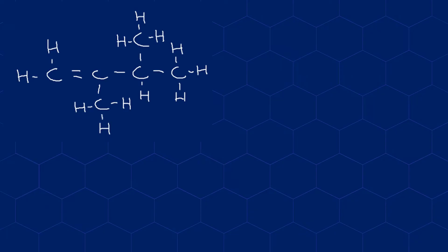The next example is a little different because it has a double bond. I'll follow the same pattern and number the carbons: one, two, three, four, five, and six. I'll start drawing from carbon one, moving along to two, then three, then four at the end of the main chain. Carbon five branches down from the third carbon, and carbon six branches up from there. There is a double bond between carbons one and two, which I show with two lines.